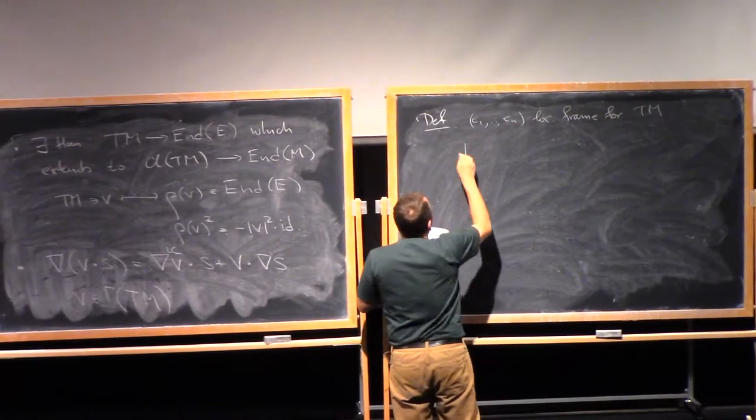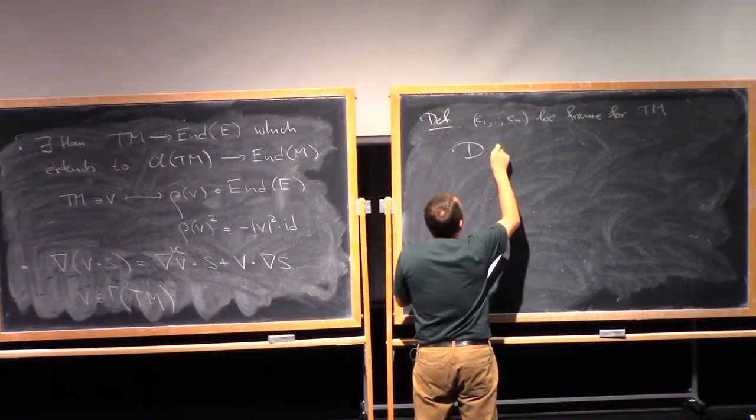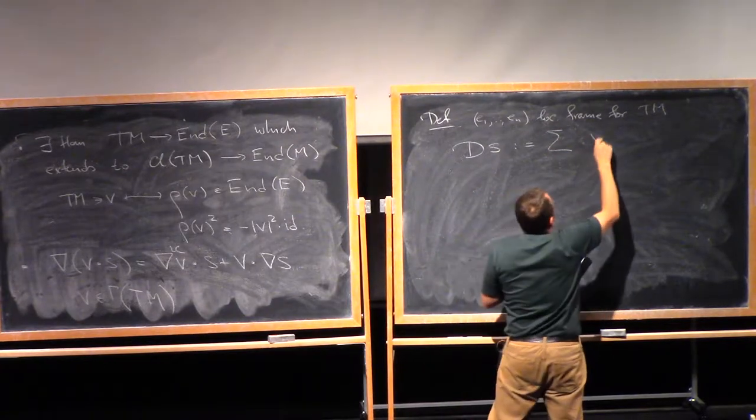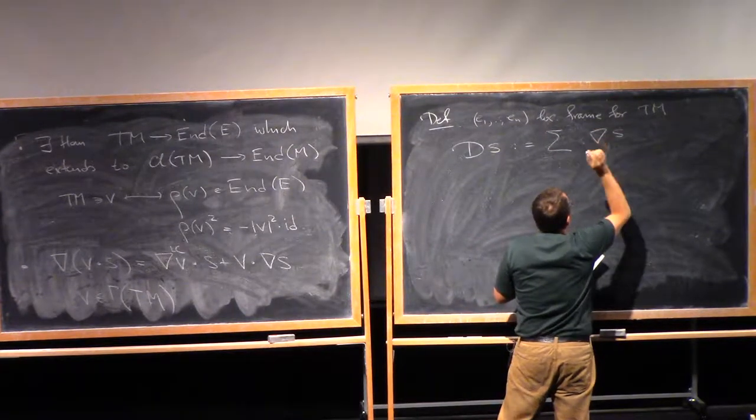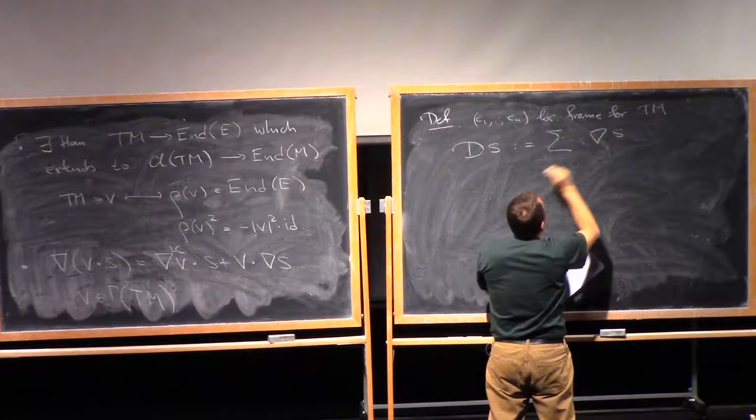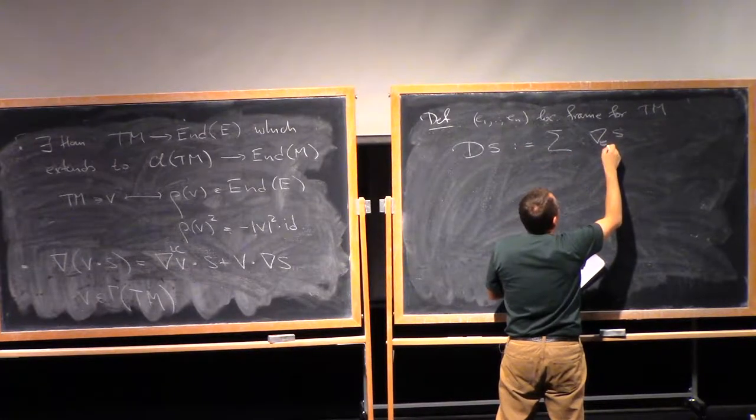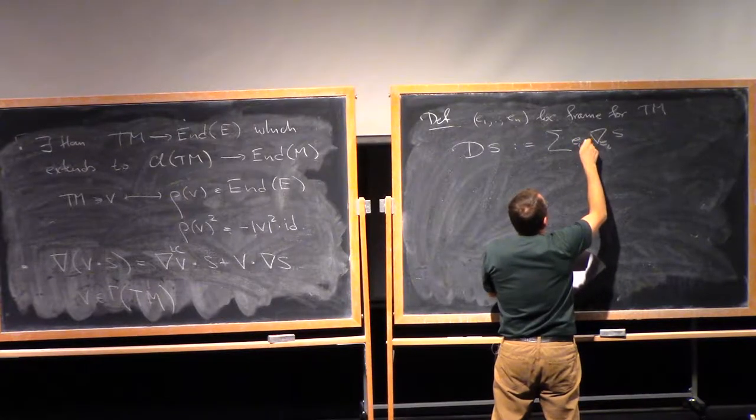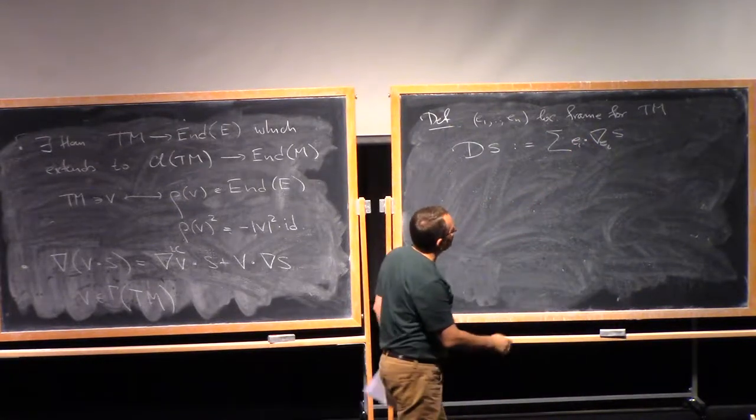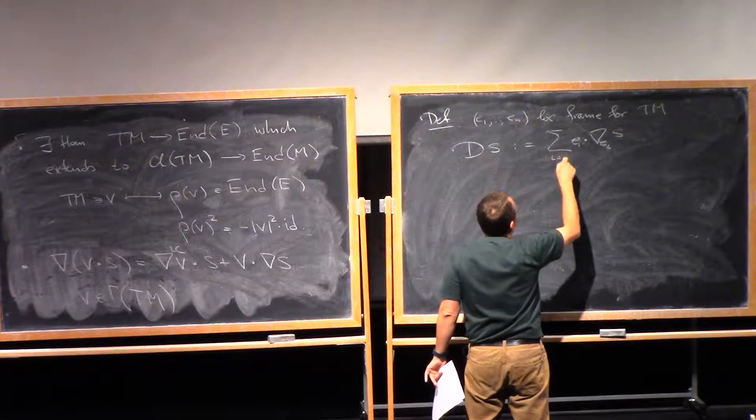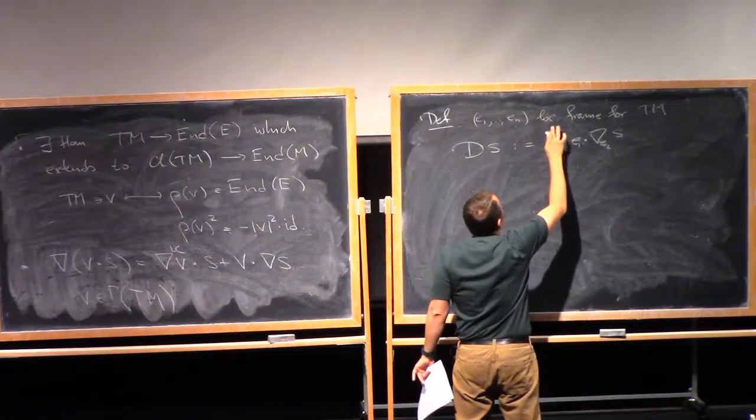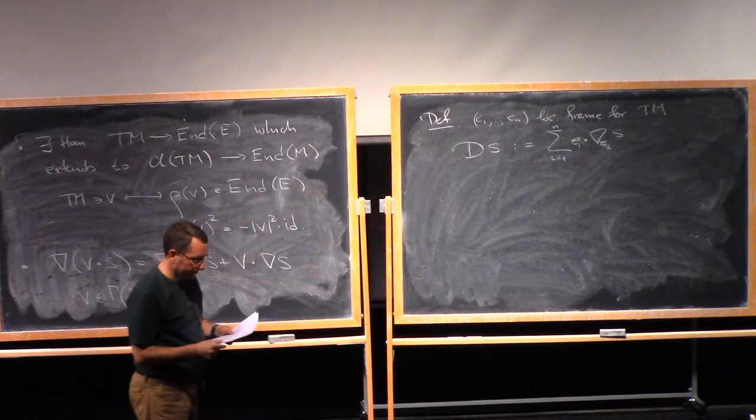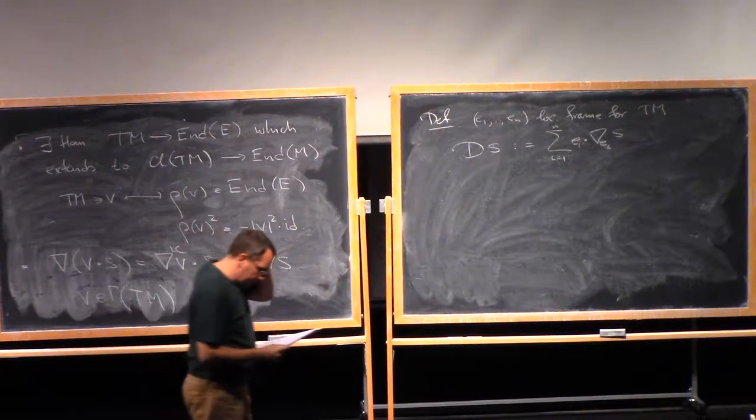then the Dirac operator applied to S is just a sum. What I take, I take the covariant derivative of S with respect to this vector, so say, EI, I take EI and Clifford multiply with this covariant derivative, and I do this for all frames from one to N.